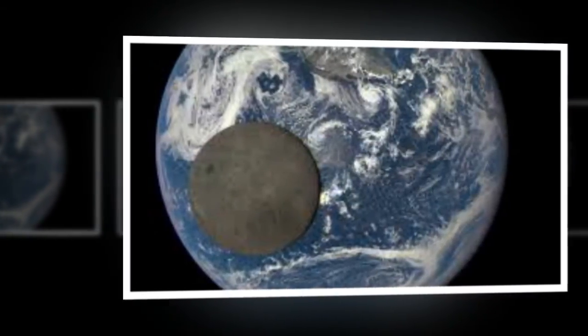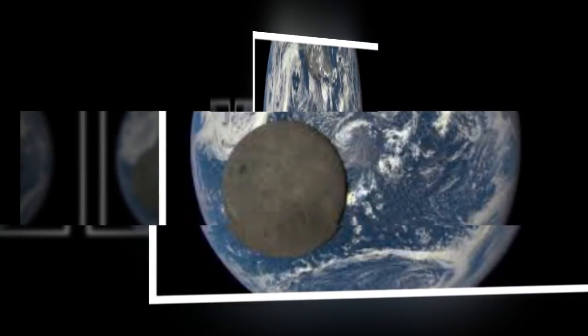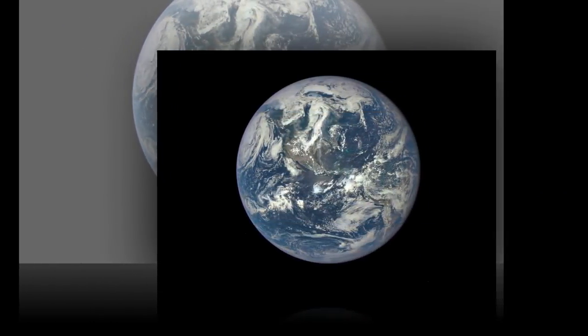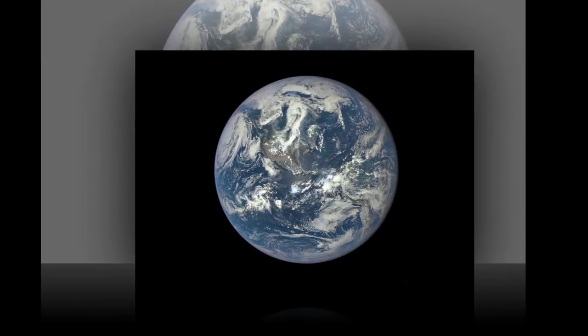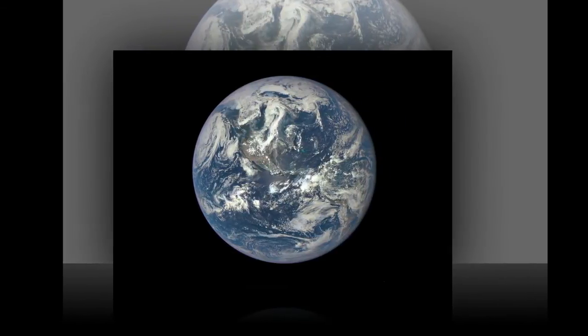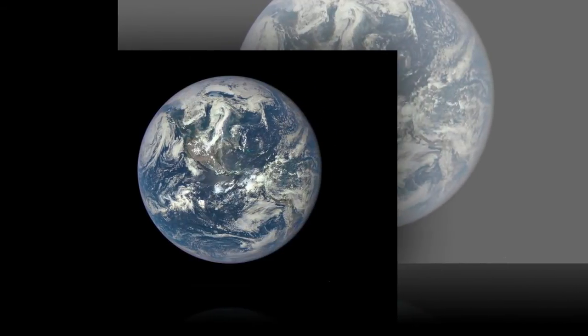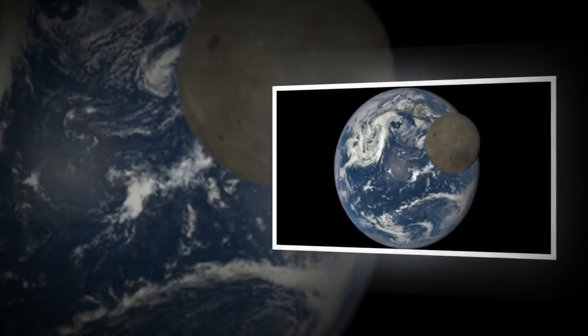About twice a year the camera will capture the Moon and Earth together as the orbit of DSCOVR crosses the orbital plane of the Moon. These images were taken between 3:50 pm and 8:45 pm EDT on July 16, showing the Moon moving over the Pacific Ocean near North America.